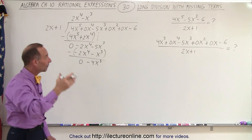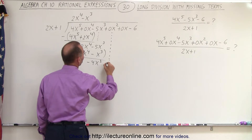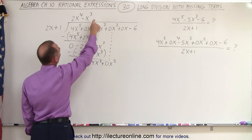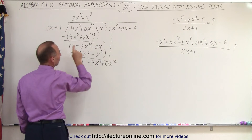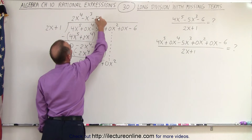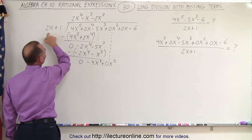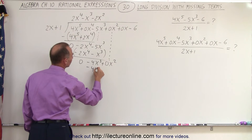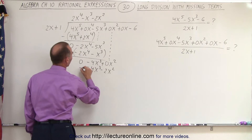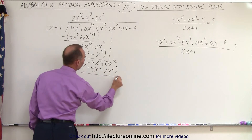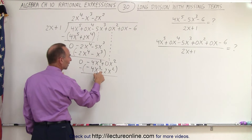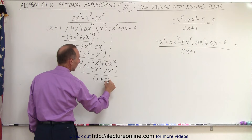Now we drop down the next term, even though it's 0x squared, so we get minus 4x cubed plus 0x squared. We ask: what times 2x gives us minus 4x cubed? It looks like minus 2x squared. Minus 2x squared times 2x gives us minus 4x cubed, and minus 2x squared times 1 gives us minus 2x squared. We subtract those from above: this minus this gives us 0, and minus times a minus makes that plus, giving us plus 2x squared.